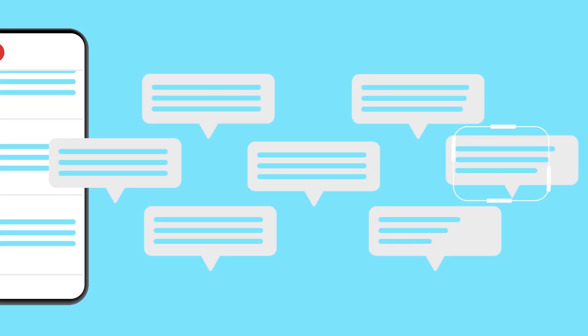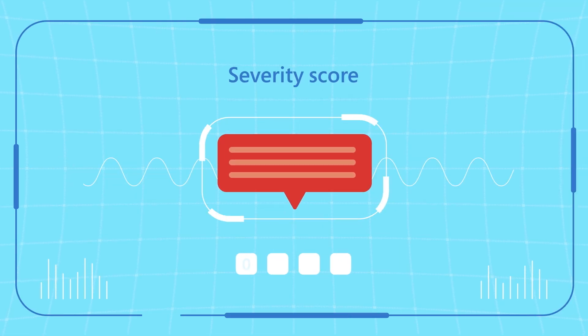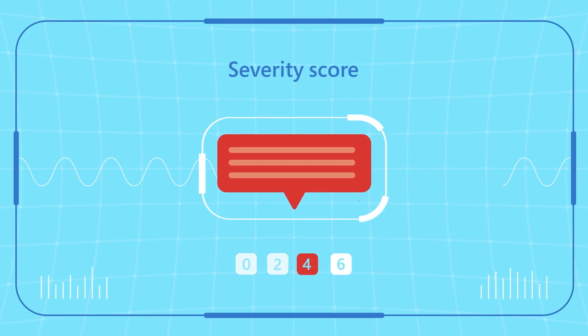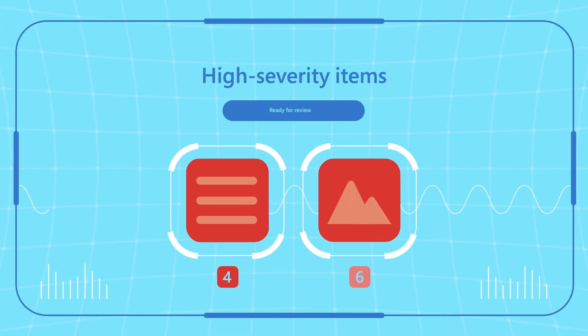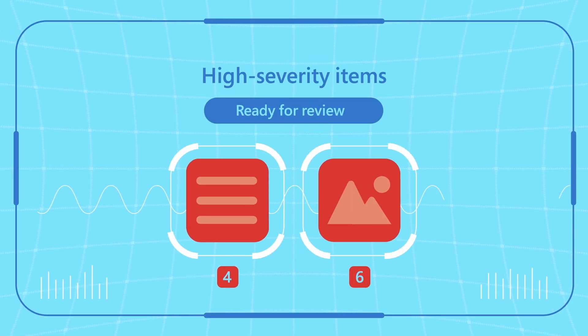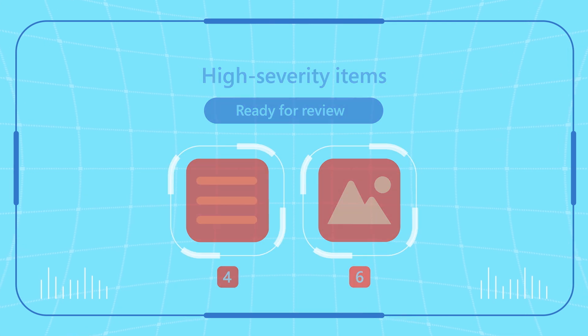When the models detect harmful content, they also assign it a severity score, allowing businesses to prioritize and review the content.